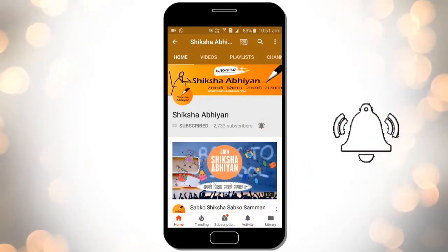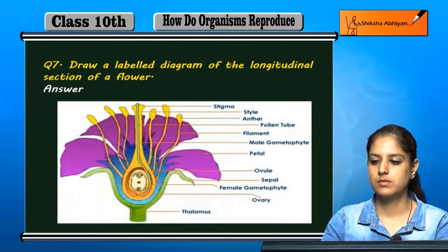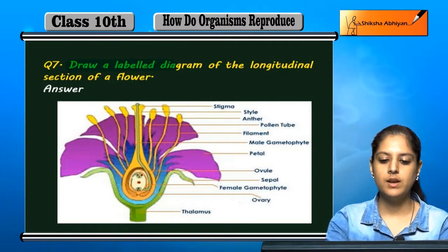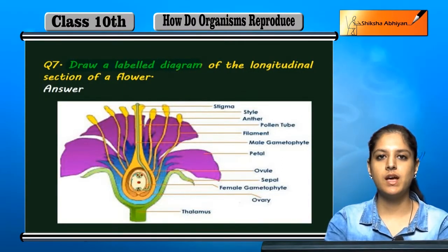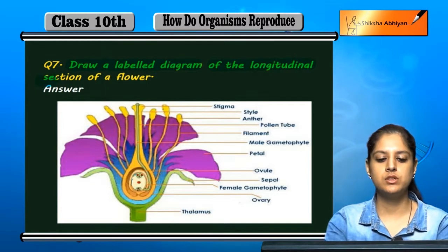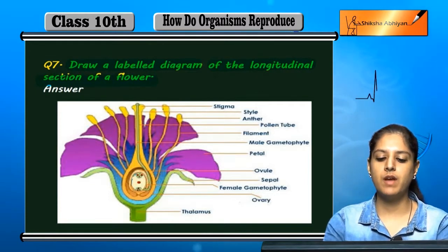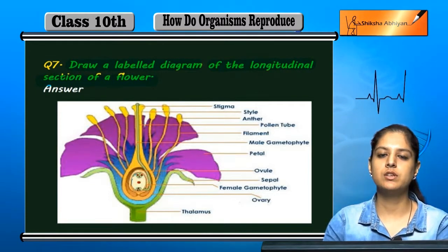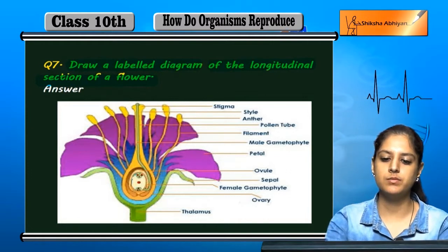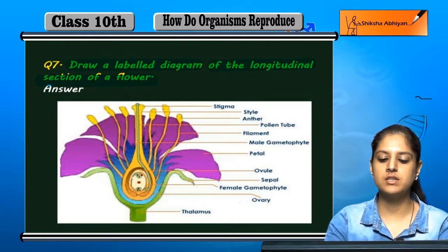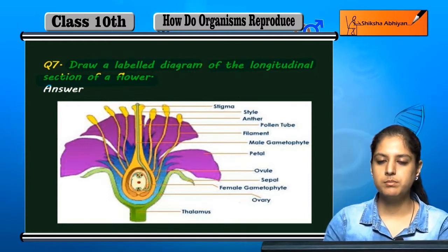Question 7: Draw and label a diagram of the longitudinal section of a flower. This is how a longitudinal section of a plant looks — it has the same parts, which we will now label.